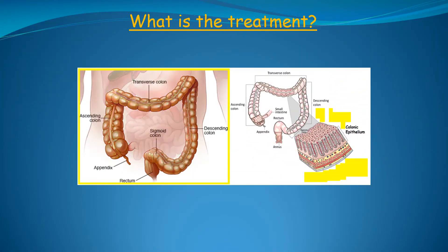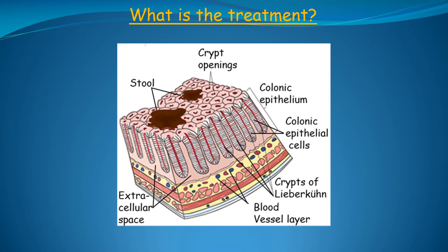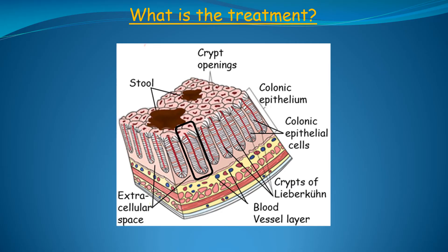To understand how the treatment works, we first need to know where the treatment works. This is an image from a previous slide showing the colon on the left, with a magnified piece of the colonic epithelium on the right. The colonic epithelium covers the entire inner surface of the colon. This high-powered view shows that the colonic epithelium is made up of cells stacked around a central hollow tube called the crypt of Lieberkuhn, after the 18th century German scientist who first identified them. There are millions of these crypts in the colon.